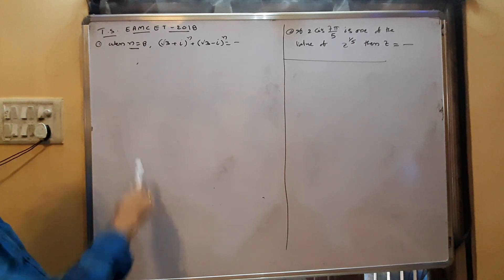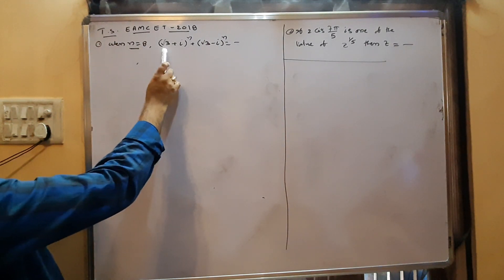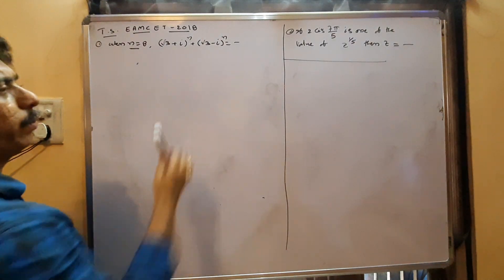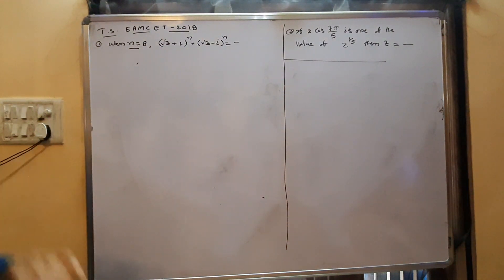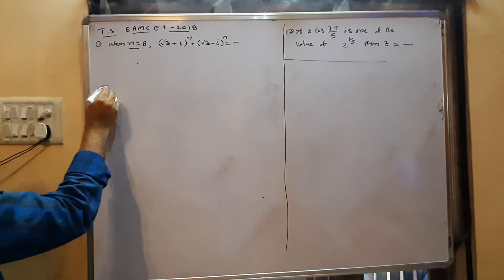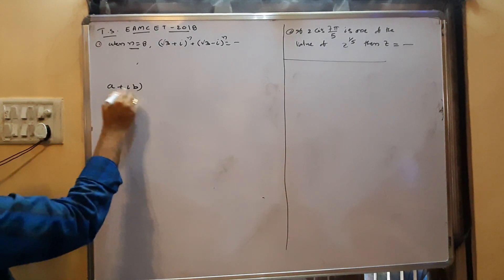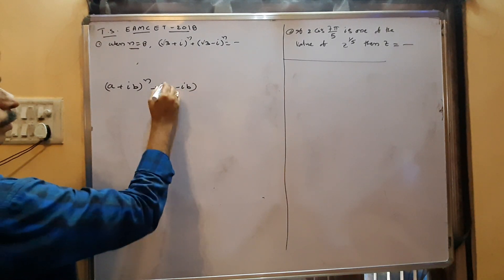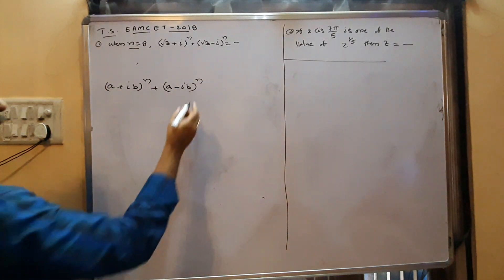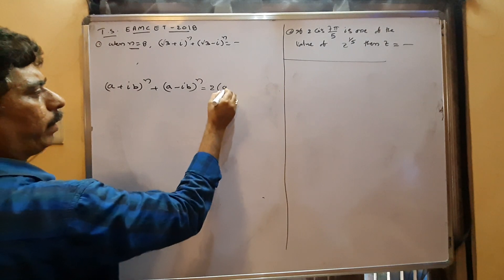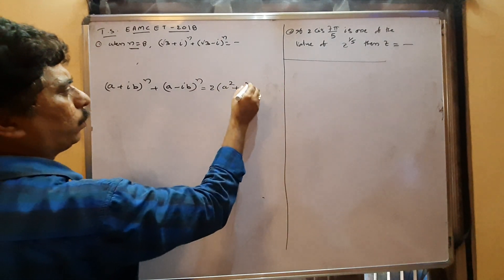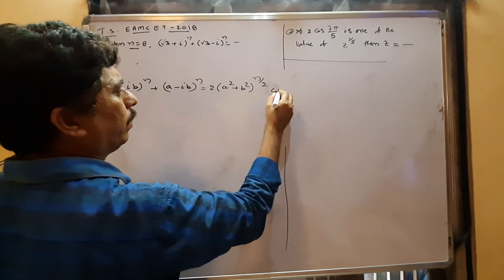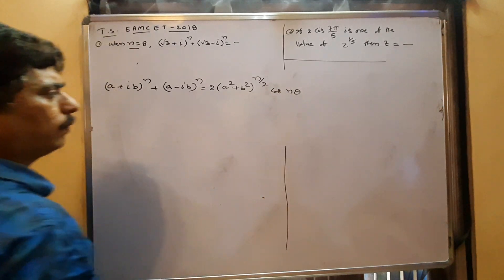See the first question. When n is 8, you have to find the value of (√3 + i)^n + (√3 − i)^n. For this, I will give one shortcut method: (a + ib)^n + (a − ib)^n equals 2 times (a² + b²)^(n/2) into cos(nθ).